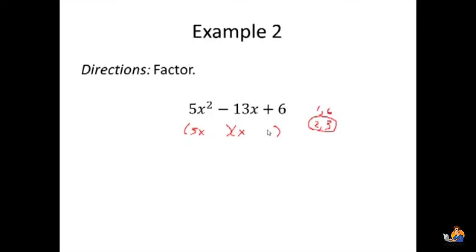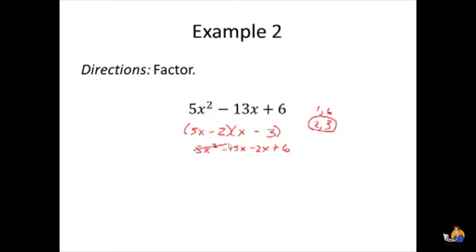Let's try putting 3 here and 2 here. The second sign says both will be the same, and the first sign says they're both negative. FOILing this out: 5x squared, then 5x times negative 3 is negative 15x, then minus 2x, then 6. This ends up being minus 17x for the middle term, so that's not right.